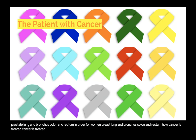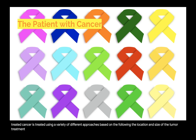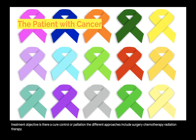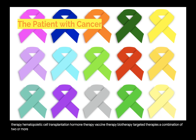Cancer is treated using a variety of different approaches based on the location and size of the tumor and treatment objective — whether there is a cure, control, or palliation. The different approaches include surgery, chemotherapy, radiation therapy, hematopoietic cell transplantation, hormone therapy, vaccine therapy, biotherapy, targeted therapies, or a combination of two or more of these.